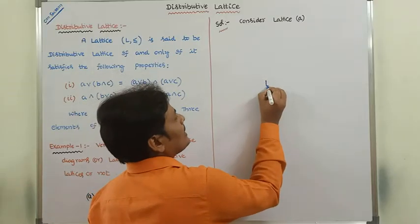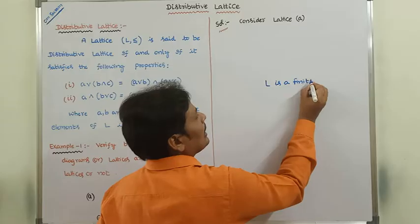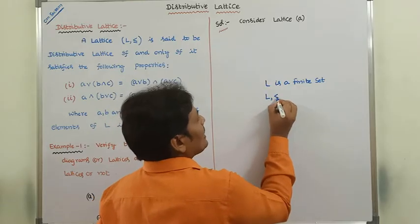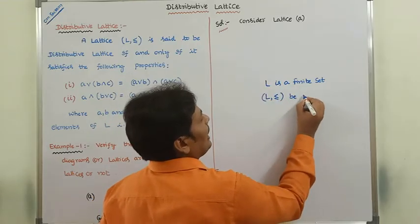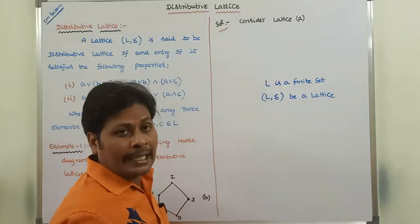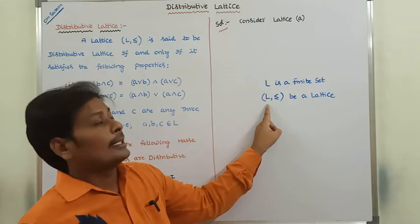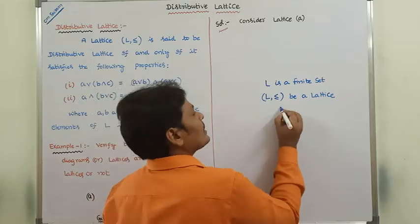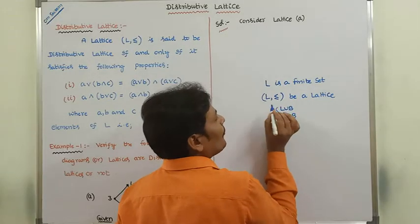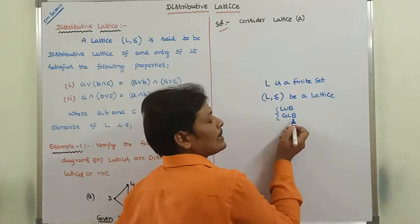First of all, let us consider L is a finite set — that means L contains a finite number of elements — and (L, ≤) is a lattice. When we say that (L, ≤) is a lattice, considering any pair of elements of L, it should contain both least upper bound and greatest lower bound for every pair of elements of L.